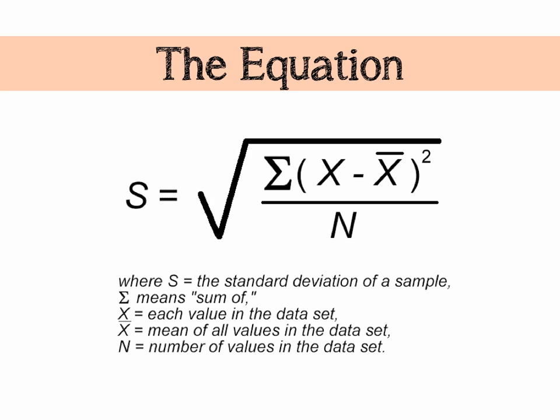So here's the equation. We've got S, or lowercase sigma sometimes, which refers to the standard deviation, which is what we want to calculate. We've got capital sigma, which means the sum of, so add it all up. And in that bracket at the top there, we've got X, which is each of the data values that we have. X bar, which is the mean of all of the values in the data set. Then we have N, which is the number of values in the data set. So let's look at that and pull it to pieces.